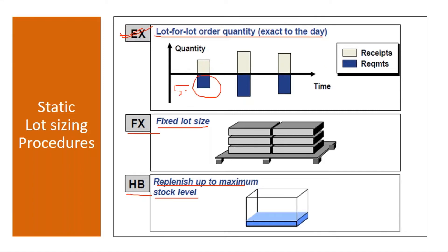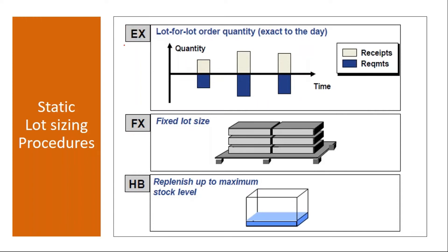First we will discuss EX — lot for lot. That means the system will create the planned order quantity or purchase requisition quantity exact to the requirement. If your requirement is 50, it will create a planned order for exactly 50. If your requirement is 100, it creates a planned order for 100. If your requirement is 70, it creates exactly 70.